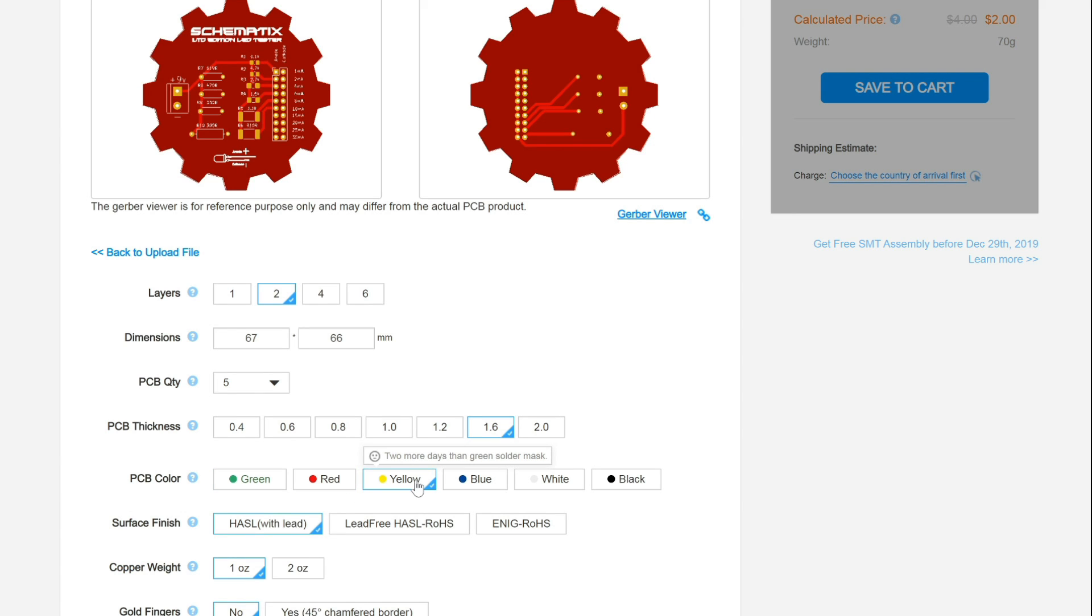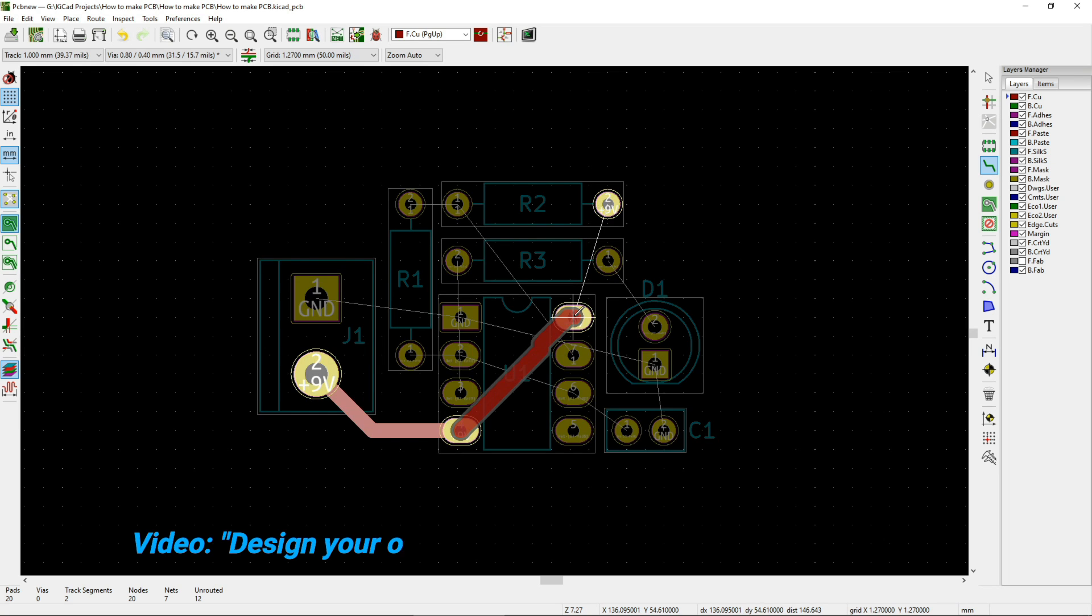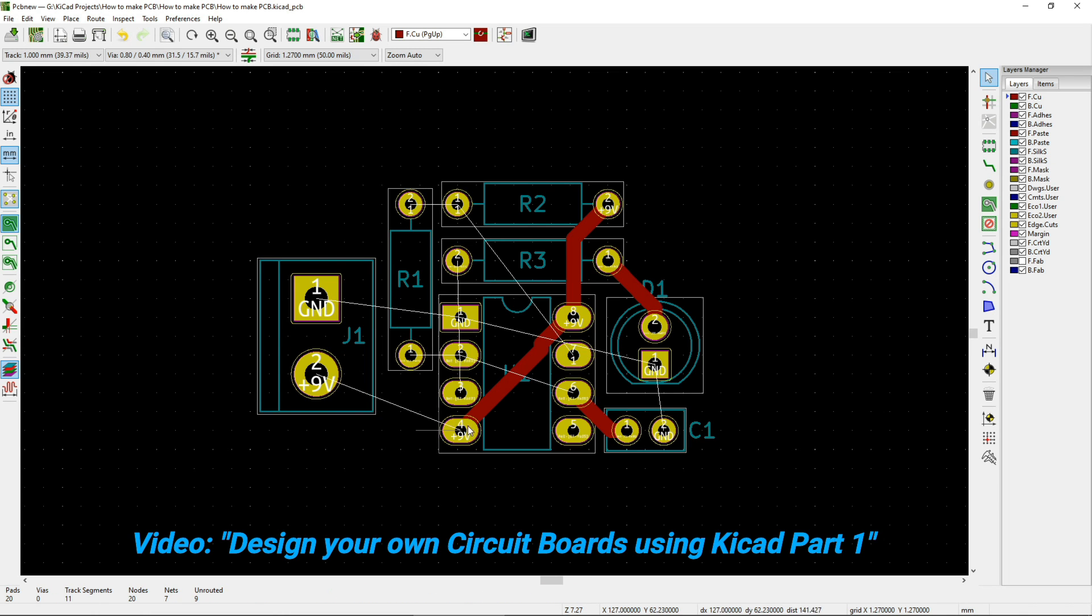Ordering is as simple as going to jlcpcb.com, uploading your gerber files, and choosing your design preferences. You can also choose any color solder mask at no additional cost. If you're new to designing circuit boards then check out my KiCad circuit board series to get you started.